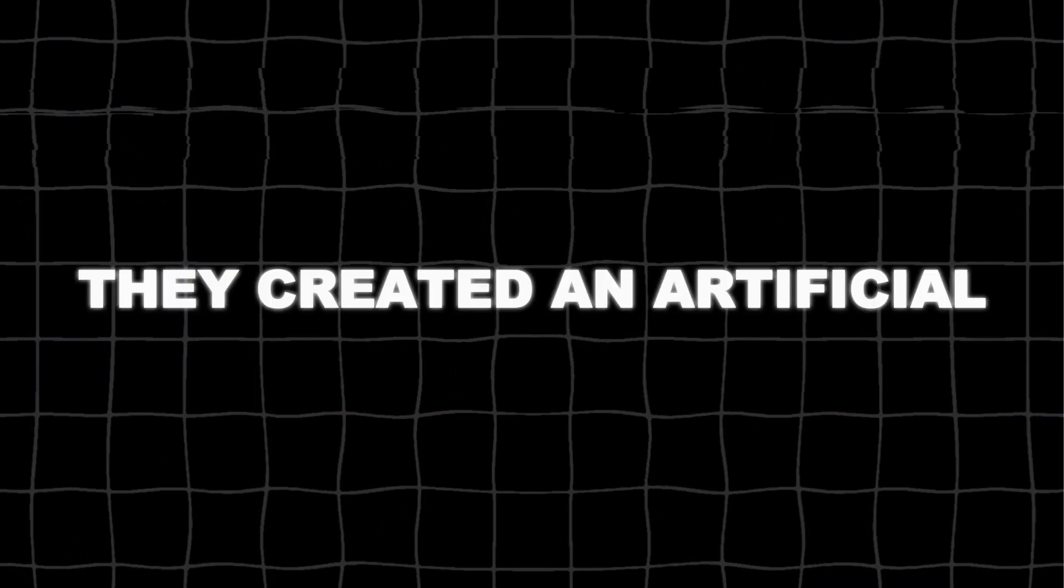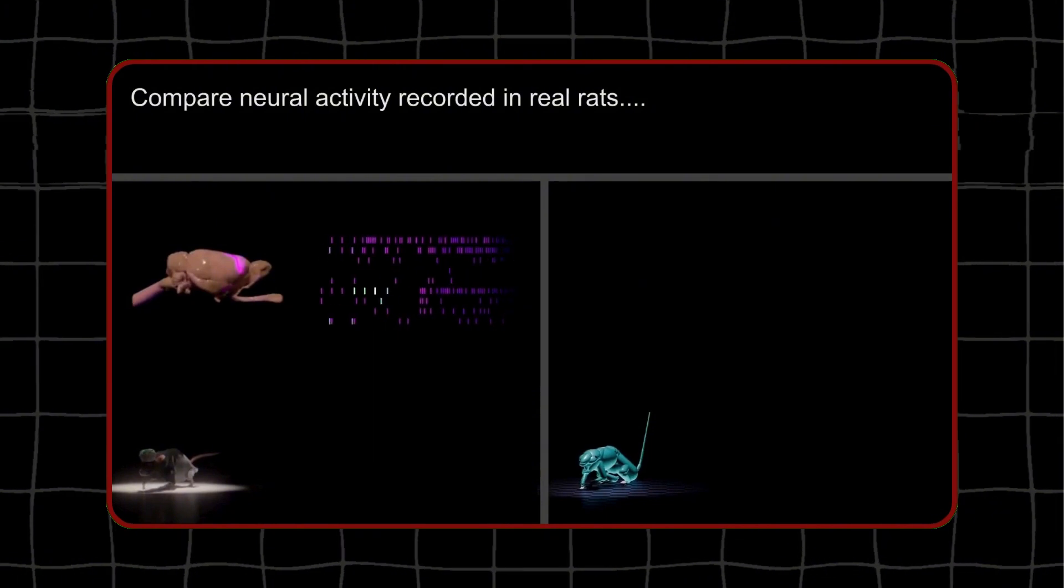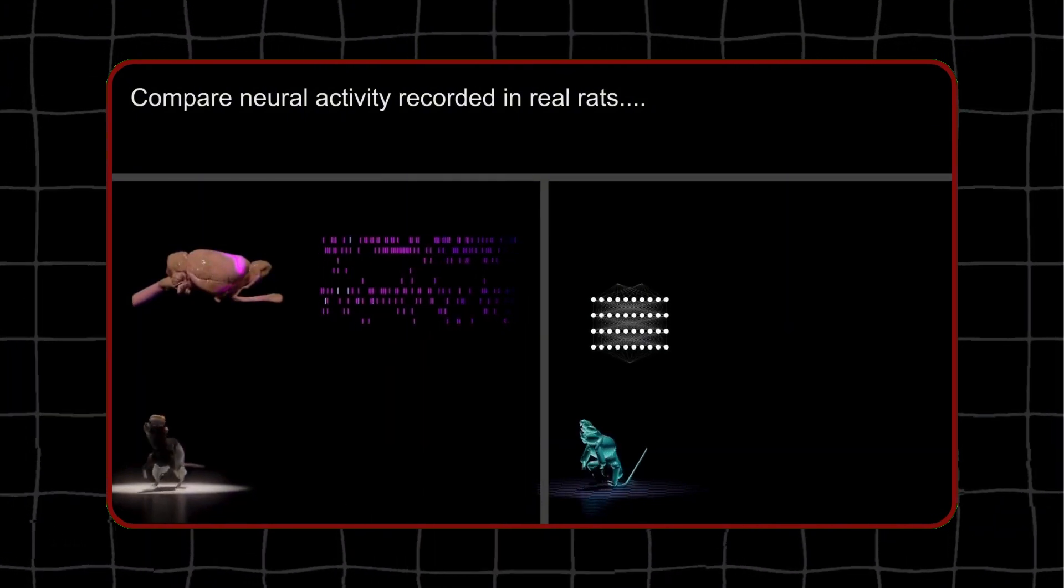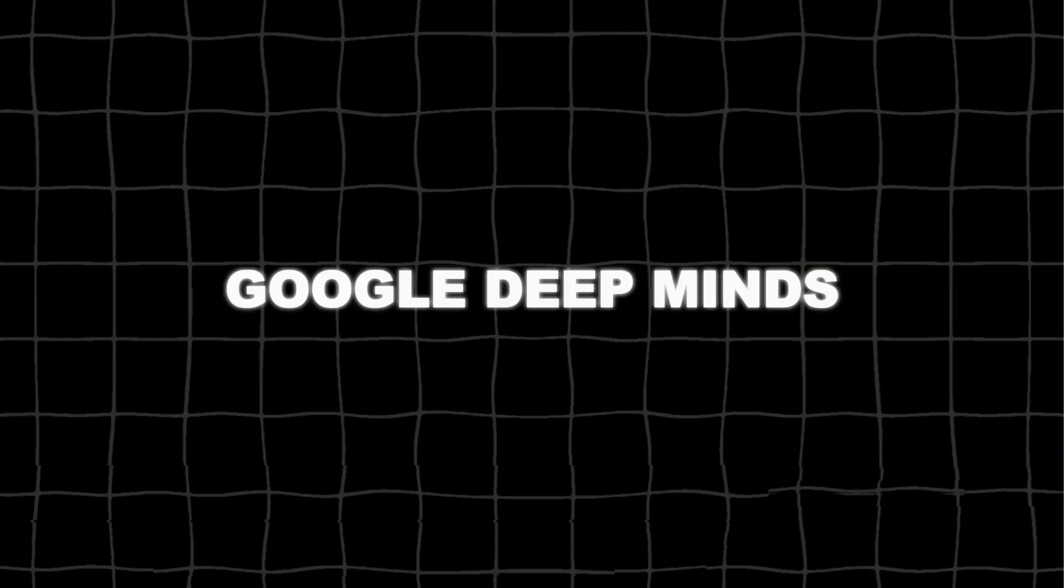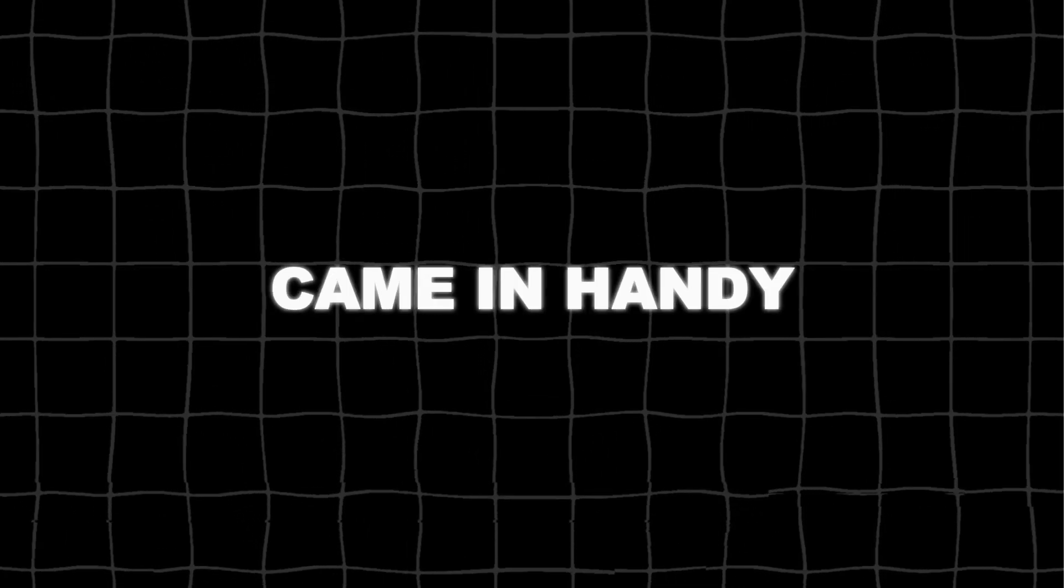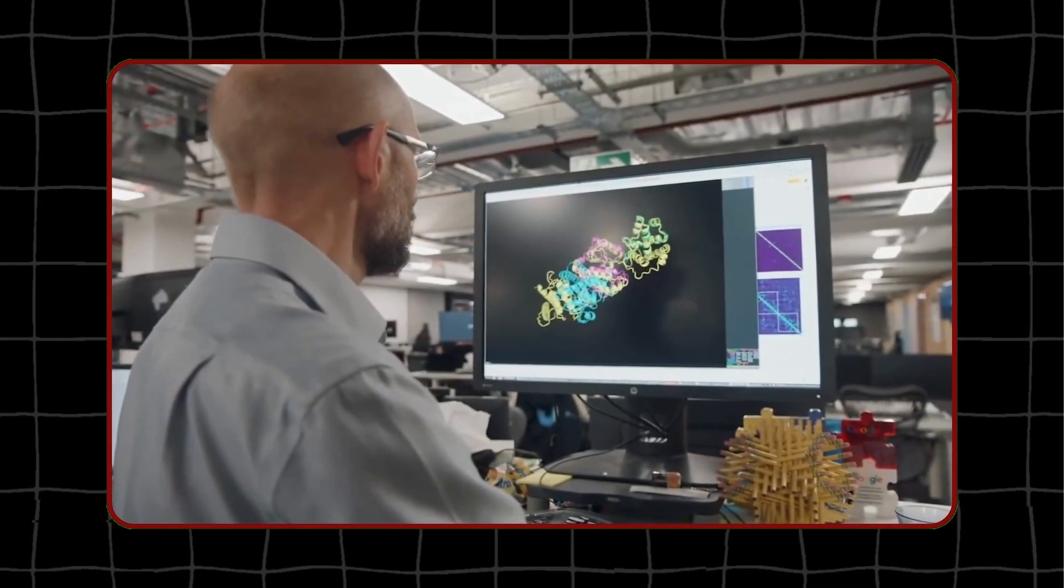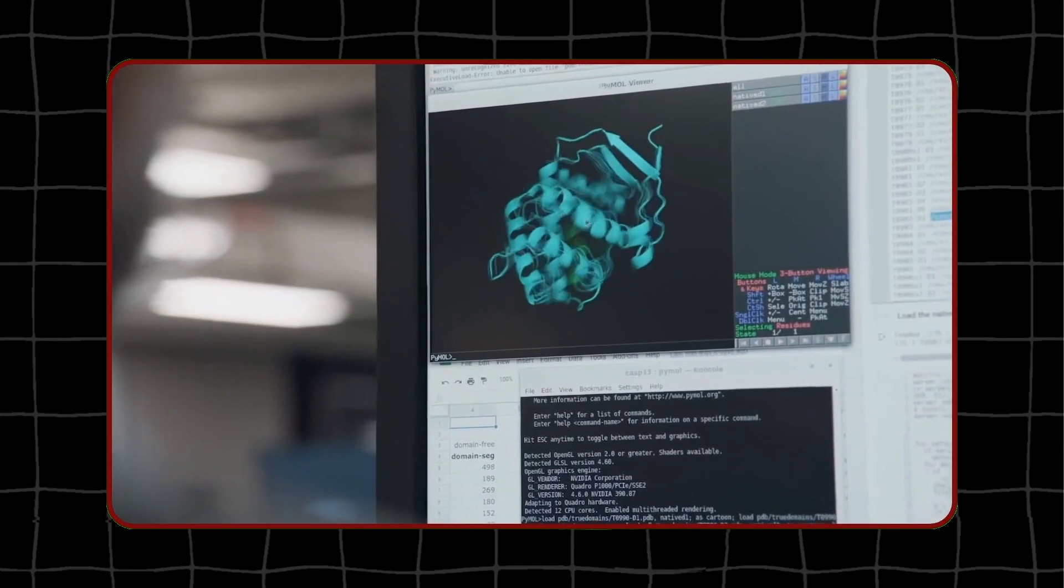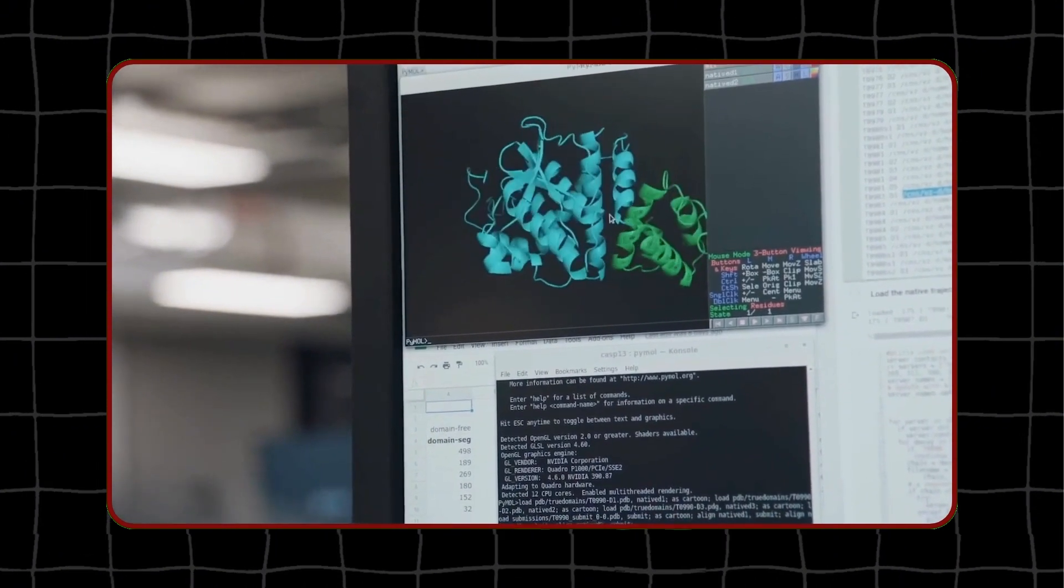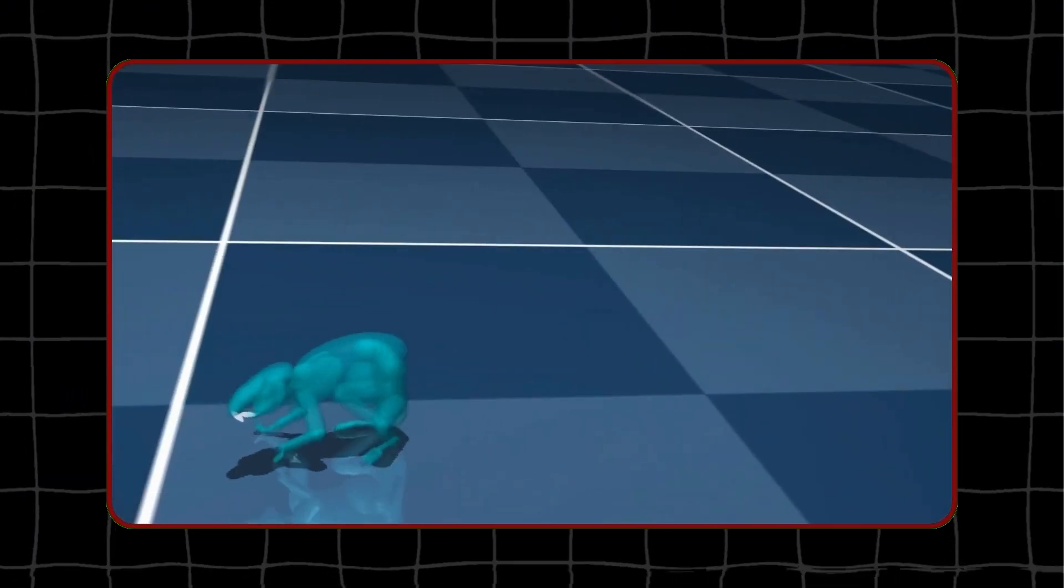Then, they created an artificial neural network that could control this virtual body's biomechanics and reproduce the movements observed in the data. This is where Google DeepMind's expertise in machine learning came in handy. They used advanced deep reinforcement learning techniques to train the artificial neural network, which would act as the virtual rat's brain.